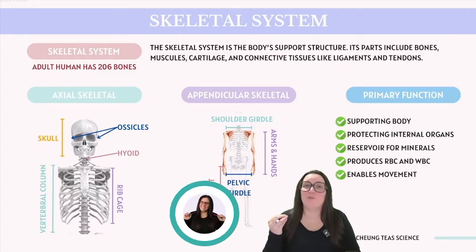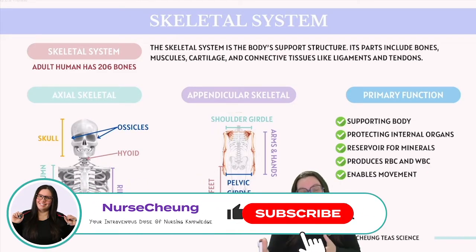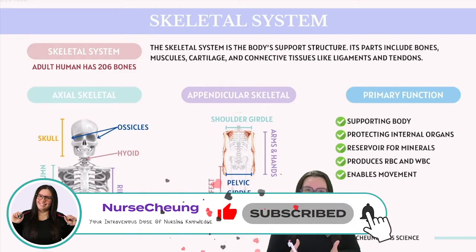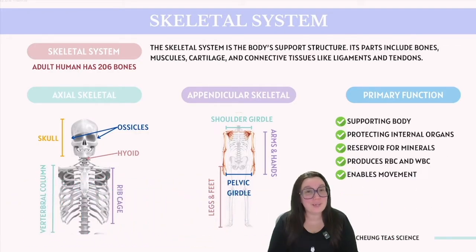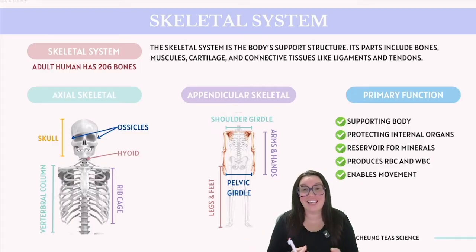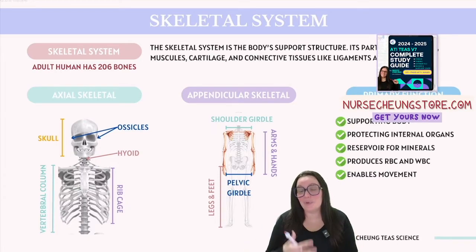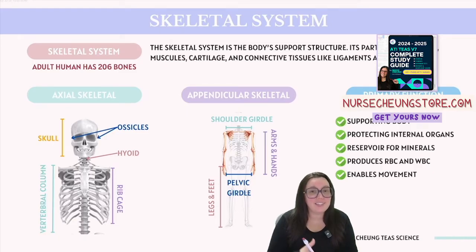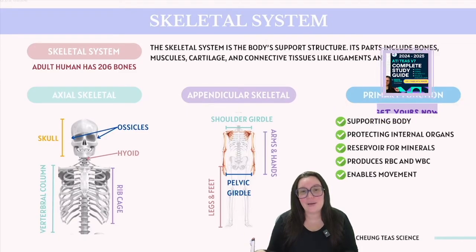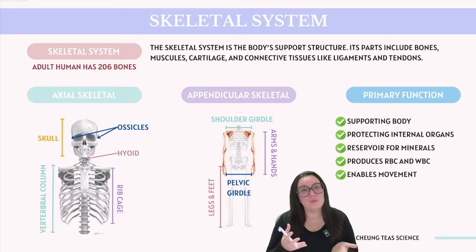The skeletal system performs a crucial role of supporting the body and protecting our internal organs. Beyond these functions, it serves as a reservoir for essential minerals, facilitates the production of red and white blood cells, and enables movement in coordination with muscles. It's important to remember that body systems do not operate independently. Many textbooks refer to the musculoskeletal system, emphasizing the interdependence between our skeletal and muscular systems.